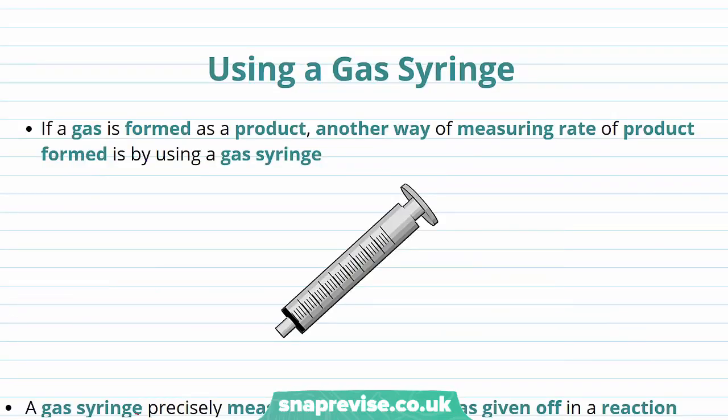So far, we've looked at using a precipitation method when one of the products formed in your reaction is a solid. As well as the change in mass, a gas syringe can also be used when one of the products is a gas.